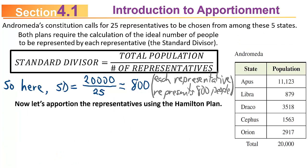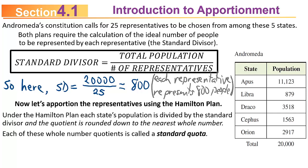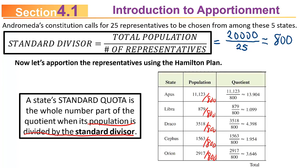Let's apportion these representatives using the Hamilton Plan. Under the Hamilton Plan, each state's population is divided by the standard divisor, and the quotient is rounded down to the nearest whole number — you divide and ignore the fractional part. Each of these whole-number quotients is called a standard quota. Taking each population and dividing by 800: Apis gets 13.904, Libra gets 1.099, Draco gets 4.398, Cephas gets 1.954, and Orion gets 3.646.